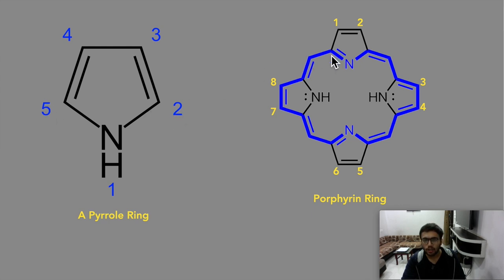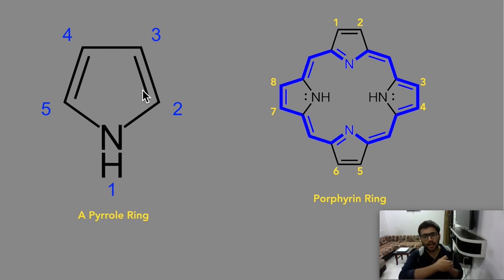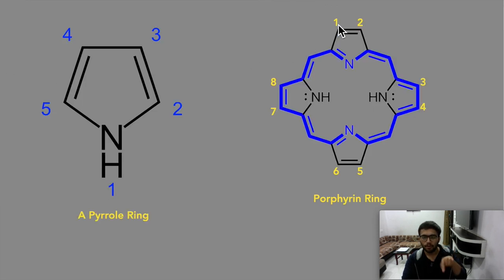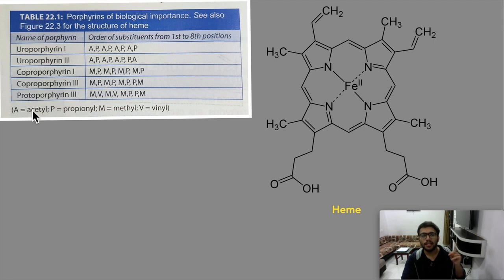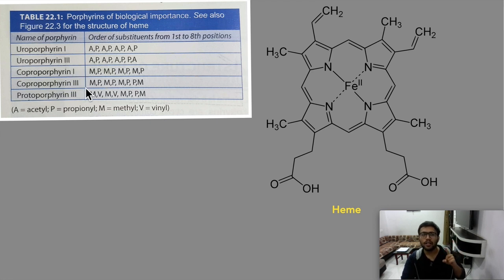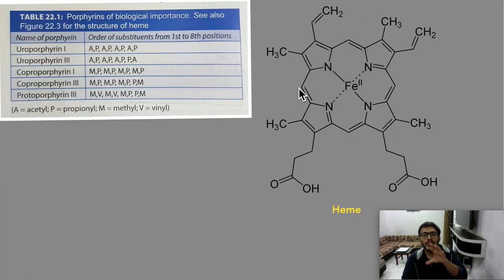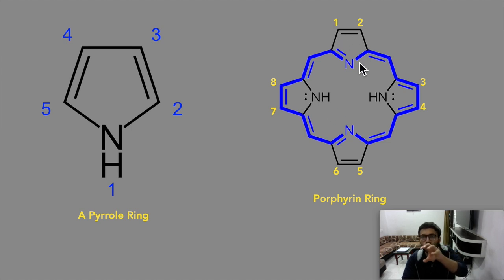Initially some positions were vacant. There are eight vacant substitution sites on the porphyrin ring. Whatever you substitute on these eight vacant sites will decide what compound you get. For example, if you substitute acetyl (A) and propionyl (P) groups at positions one through eight, you get a specific porphyrin — for instance, uroporphyrin type 1 or type 3.